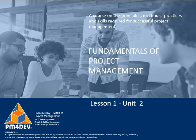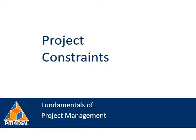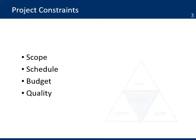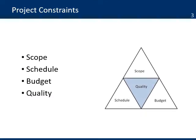Lesson 1, Unit 2: Project constraints. You learn from the definitions that projects need to manage constraints. Every project has to manage four basic constraints. The first one is scope — all the work needed to complete the project.